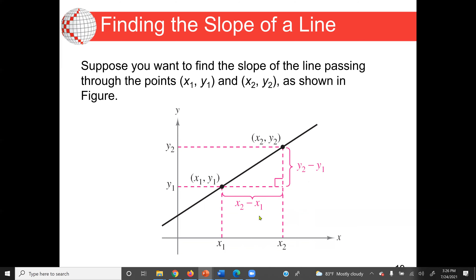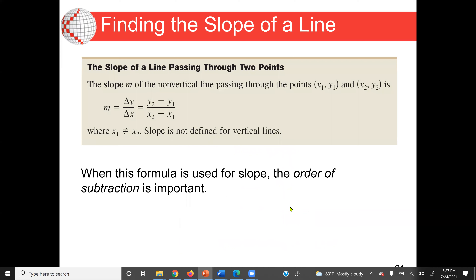We can also write the slope as y1 minus y2 over x1 minus x2. But it would be incorrect to say y2 minus y1 divided by x1 minus x2 — y2 and x2 must be aligned together, or y1 and x1 must be aligned. The slope formula is dy/dx, which gives us y2 minus y1 divided by x2 minus x1.